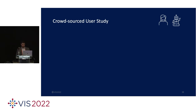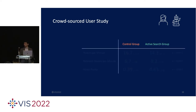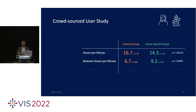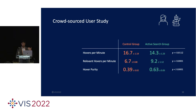Let's look at some of our findings. Looking at overall throughput over time: the x-axis has time since the beginning of the session, and the y-axis has the total number of relevant microblogs discovered. The active search group outperforms the control group for the duration of the session. Looking at hovers per minute, the control group was working harder — hovering on more points per minute — but the active search group actually inspected more relevant points and was more efficient. We also looked at hover purity, the proportion of relevant hovers over total hovers. Again, the active search group had significantly higher purity.